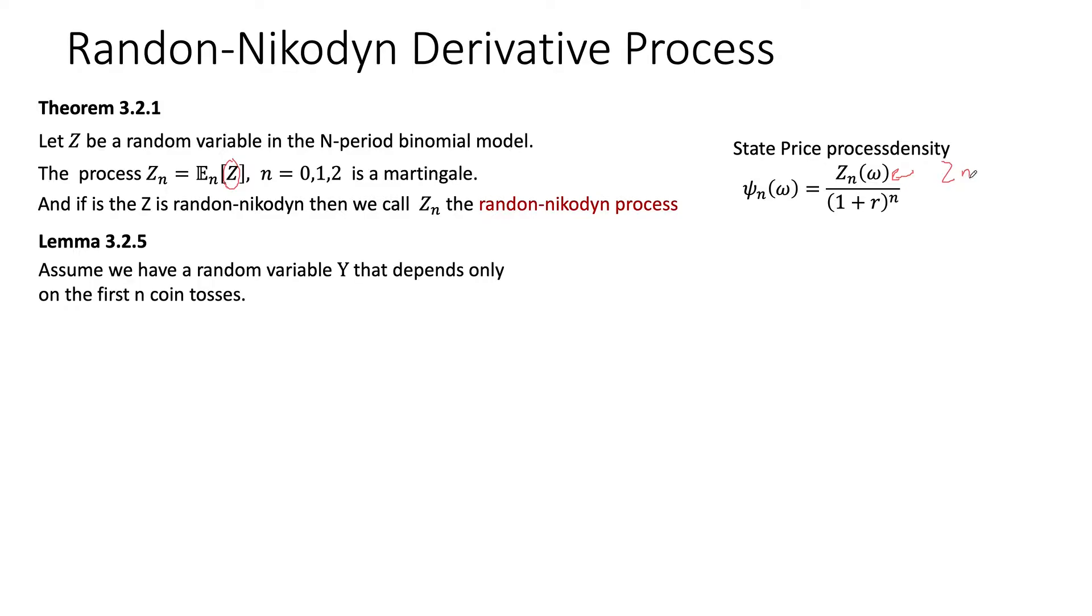So this comes with a few lemmas. Let's assume, for example, that we have a random variable Y that depends only on the first n coin tosses. Then we can say that the expected value of Y under the risk-neutral world is equal to the expected value under the real world of this Randon-Nikodym derivative process Z_n times Y. And I can show very quickly how to prove this. So the expected value under the risk-neutral world of random variable Y, and remember Y depends only on the first n coin tosses. We have shown before that we can convert from the risk-neutral world to the real-world probabilities by taking Y and multiplying it by the Randon-Nikodym derivative Z.